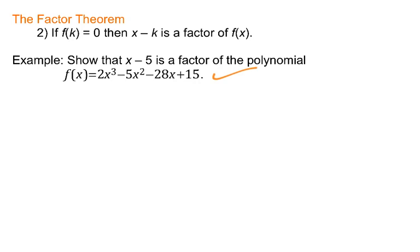If I want to show that x minus 5 is a factor, the question I can ask is: can I show that f(5) equals 0? If I can show that 5 is a zero, then that would prove that x minus 5 is a factor of the polynomial by this Factor Theorem.